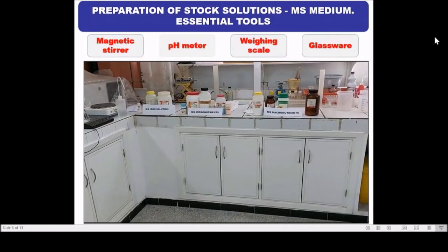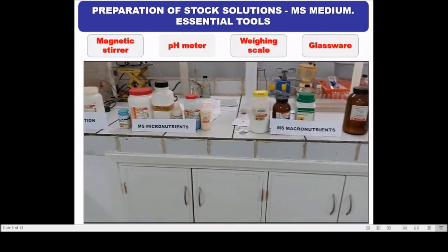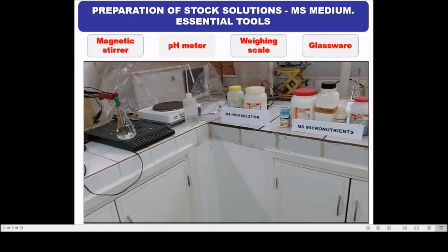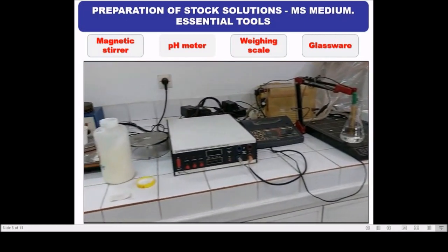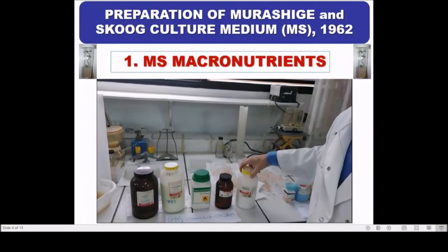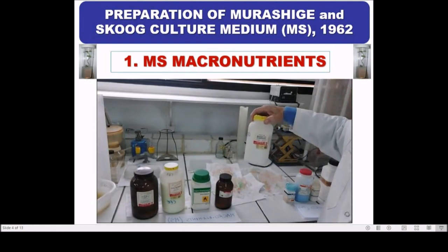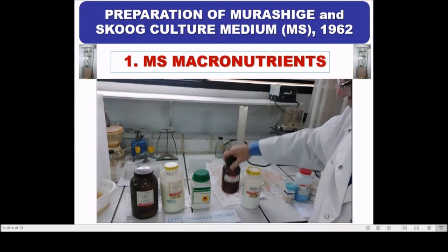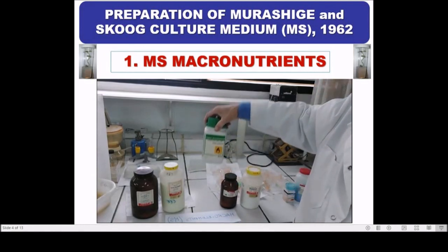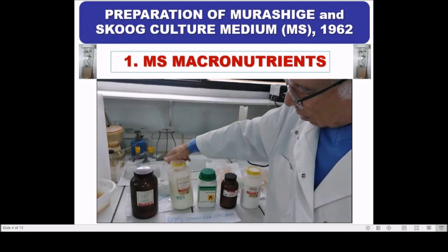To prepare stock solutions of the culture medium, we need some essential materials and tools like a magnetic stirrer, pH meter, weighing scale, balance, glassware and other tools. The macro elements of Murashige and Skoog are potassium phosphate, potassium nitrate, ammonium nitrate, magnesium sulfate, and calcium chloride.